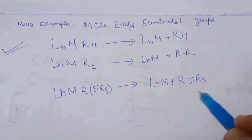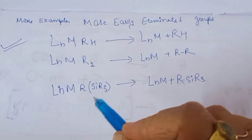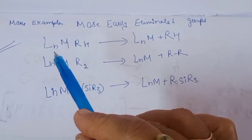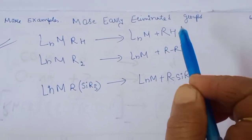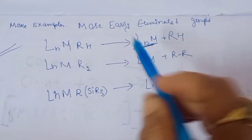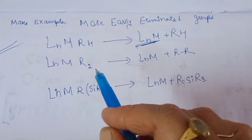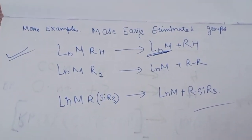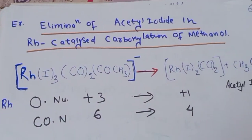Groups that are easily eliminated include RH, R2, and SiR3 (silanes). For example, in a complex LnM with an RH group, RH is eliminated and the resulting complex has a coordination number two less than the starting complex — octahedral converts to square planar. Similarly, R2 and SiR3 ligands can be eliminated.